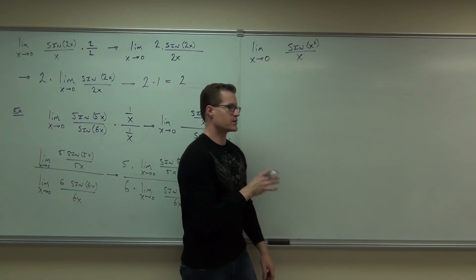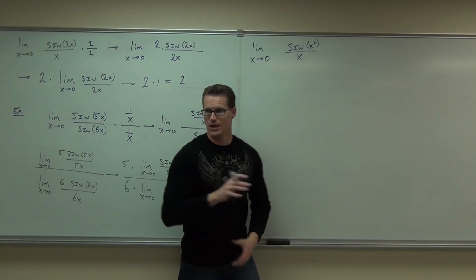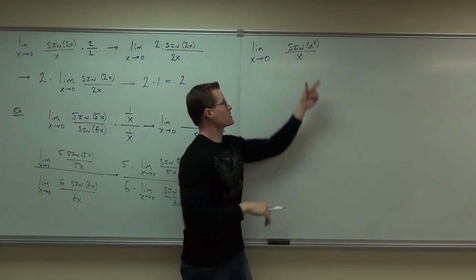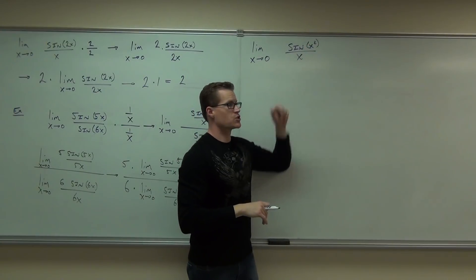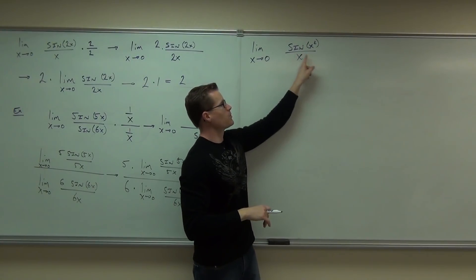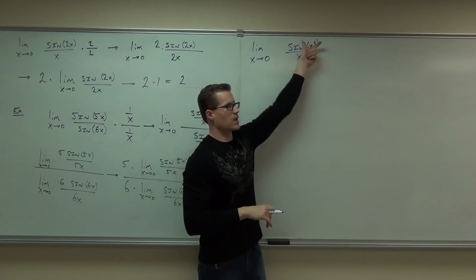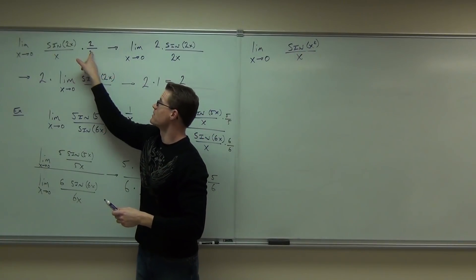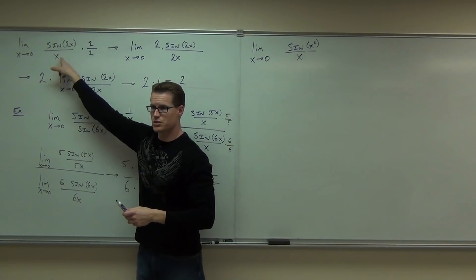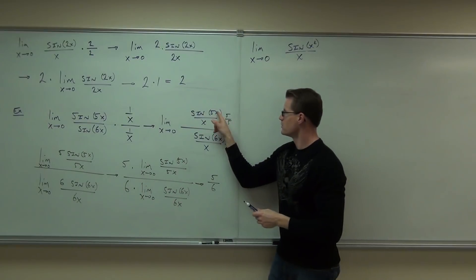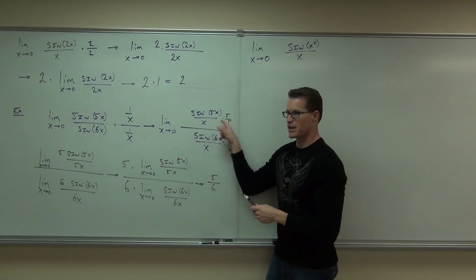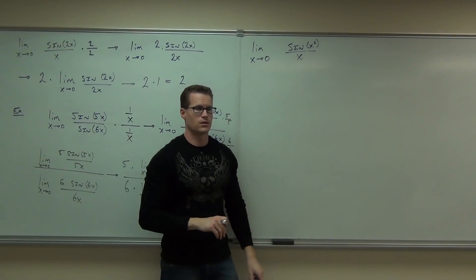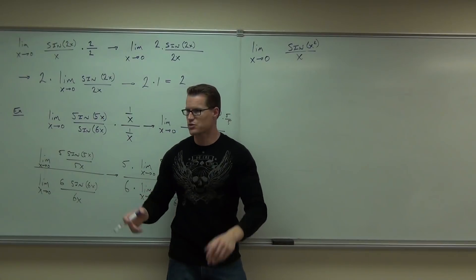What you want to do is make it so that — if you haven't noticed this in the previous two examples — make it so this angle matches your denominator. What do you need to multiply by to make your angle match your denominator? That's what we did here. Multiply to make your angle equal to your denominator. That's where the five came from. What do you need to multiply by? X over x — x over x would work.